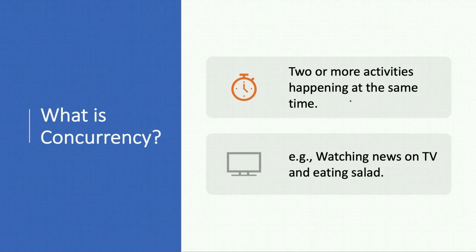This is the very simple explanation. If you'd like to relate it to a real life example, you can think of watching news on TV and at the same time eating salad. You're doing two things at the same time - this is the main concept of concurrency, and it applies to our computer programs as well.